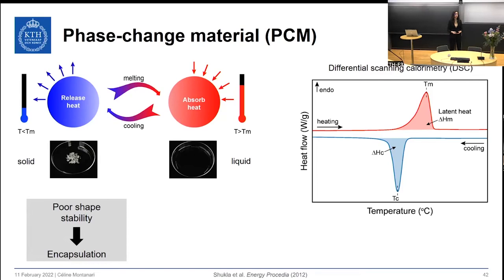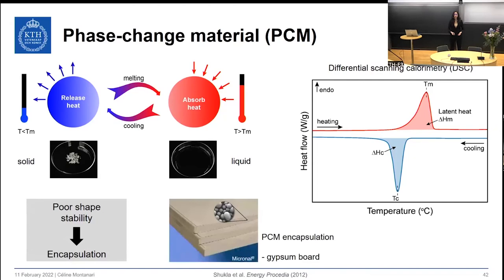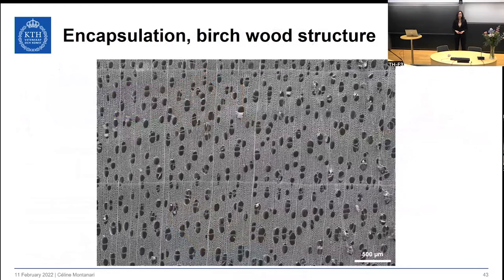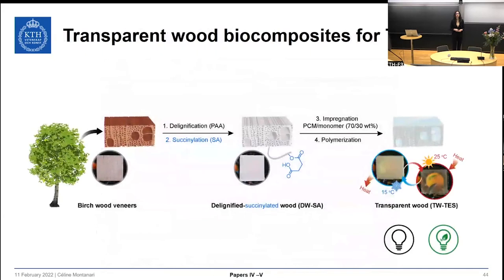Commercially, phase change materials have been encapsulated by impregnating them within gypsum boards. In this thesis, we suggest wood as an encapsulating medium. We use birch wood because it has a homogeneous structure throughout the growth rings as well as a mesoporosity useful for encapsulating a phase change material. We prepared transparent wood biocomposites for thermal energy storage by impregnating the phase change material together with a polymer matrix, demonstrating both a proof-of-concept and a bio-based design.